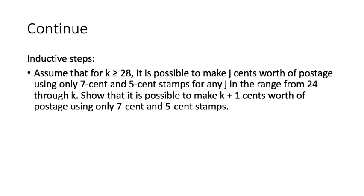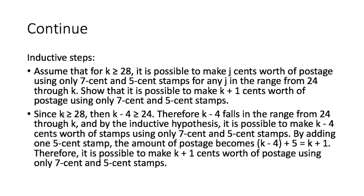Now, this is doable because since k ≥ 28, then k-4 ≥ 24. Therefore, k-4 falls into the range from 24 through k. And by the inductive hypothesis, it is possible to make k-4 cents worth of stamps using only 7-cent and 5-cent stamps. By adding one 5-cent stamp, the amount of postage becomes k-4+5, which is k+1. Therefore, it is possible to make k+1 cents worth of postage using only 7-cent and 5-cent stamps.